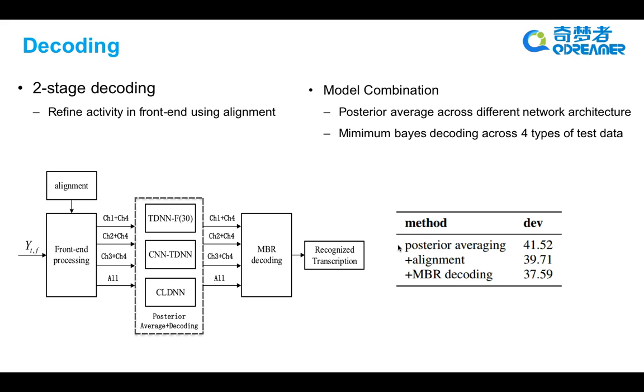The right table shows our decoding results. As we can see from the table, with the posterior average and MBR decoding, we can achieve a WER of 37.59.